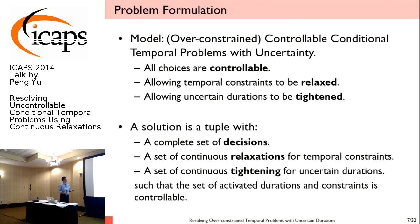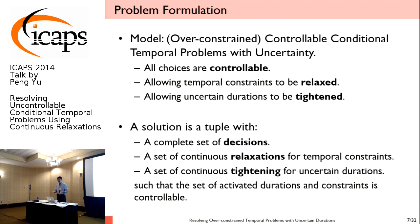The problem formulation we use is called the Controllable Conditional Temporal Problem (CCTP). Constraints in the temporal network are conditioned on assignments to decisions, and all decision variables are controllable — we can choose which bus to take, which restaurant to go to, or store for grocery shopping. There are three key elements: choices, controllable constraints that can be relaxed, and uncertain durations that can be tightened if necessary. The solution is a three-tuple: the decision to make, a subset of constraints to relax, and a subset of uncertain durations to tighten. We discuss both strong controllability and dynamic controllability.